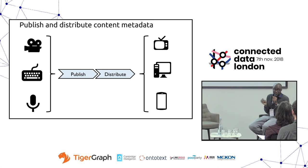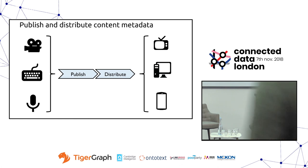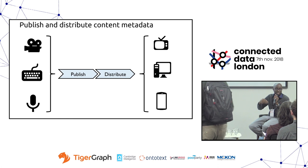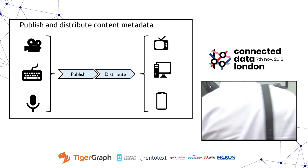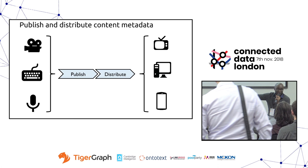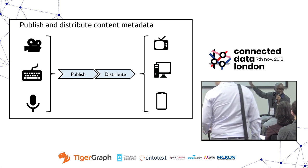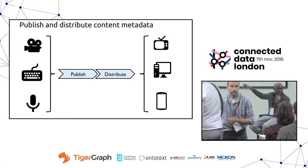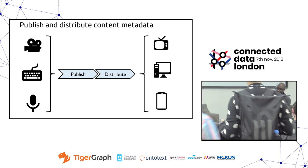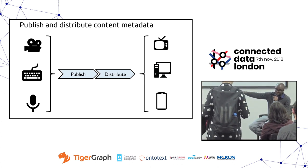The main use case is moving metadata about BBC content from the systems that create it — mainly editorial systems — to the systems that consume it, mainly audience-facing products. So from content management systems on one end to the sports website, iPlayer, and so on, on the other. We need to get this metadata published and distributed within the BBC.